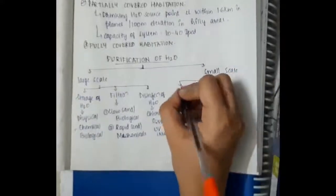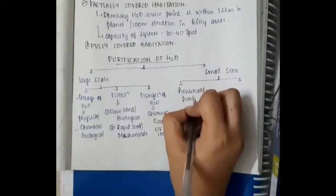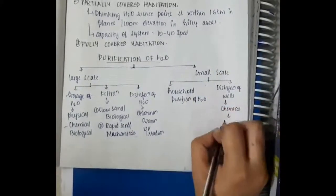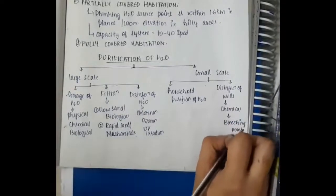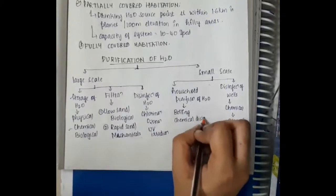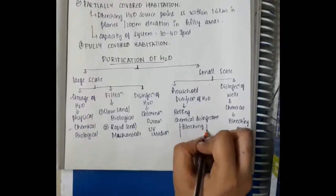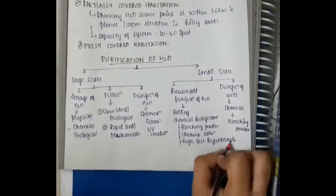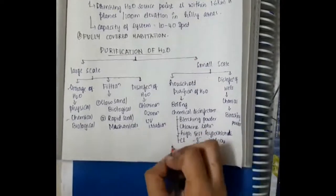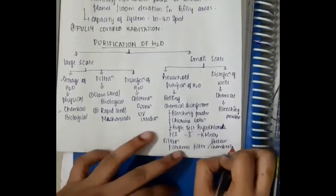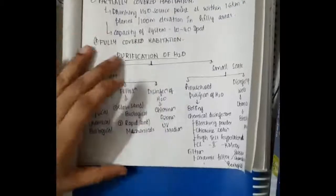Small scale purification of water includes household purification and also disinfection of wells. Disinfection of wells can be through bleaching powder — that is chemical disinfection of wells. Household purification of water can be through boiling, usage of chemical disinfectants like bleaching powder, chlorine solution, or high test hypochlorite solution, usage of solutions like chloride, iodide, or KMnO4, or filtration using ceramic filters, Pasteur-Chamberland filters, or Berkefeld filters.